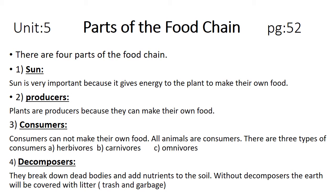All animals are included in the category of consumer. There are three types of consumers: herbivores, carnivores, and omnivores. Herbivores are animals that feed on grass and plants. Carnivores are animals that feed on meat and flesh. Omnivores are animals that eat both plants and meat.